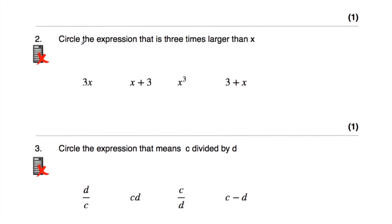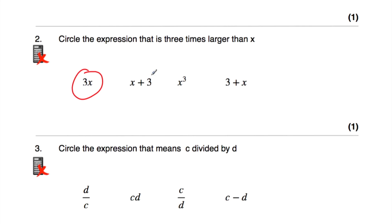Question number two says: circle the expression that's three times larger than x. If we want to find something three times larger than a number, we multiply it by three. So if you said find the number that's three times larger than five, well three times five is 15. In algebra, when we multiply a letter (a variable) by a number, we just put the number in front of it. So 7w means seven times w. Three times x is 3x. Here we've got 3x — that's three times larger than x. x plus 3 is three more than x. x cubed means x multiplied by itself and by itself again. And 3 plus x also gives the same as x plus 3, but we want three times larger, so the answer is 3x.